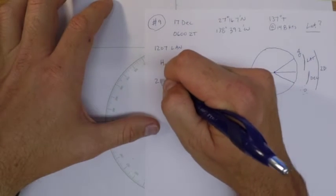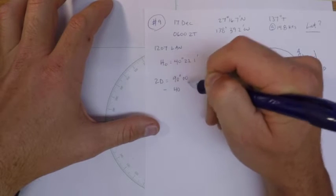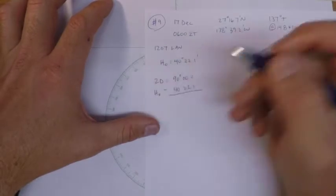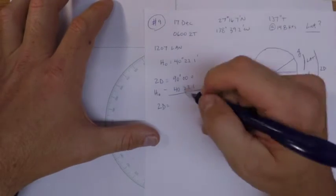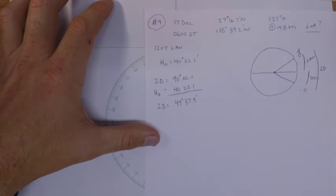First thing we'll do is get zenith distance, which is 90 minus our height observed. So if we do that out, we get 49 degrees and 37.9 minutes.